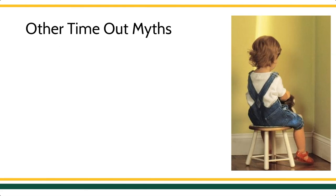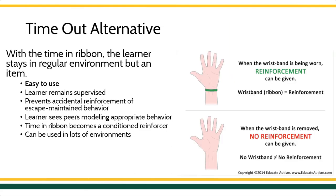Timeout is so difficult to implement properly — emotional responding, the child potentially being excluded — so many difficulties that I would argue the better way to go is a time-in alternative called the time-in ribbon. The time-in ribbon flips all of this on its head. We have a culture where we say, 'if you've been bad, get out,' and it's a terrible, misguided way of trying to treat behavior. Instead, what the time-in ribbon says is: when you're doing the right thing, you keep access to the reinforcing environment. The learner has some sort of token item — it can be a wristband like one of those rubber bracelets, a slap bracelet, a name tag — essentially they have the token item.